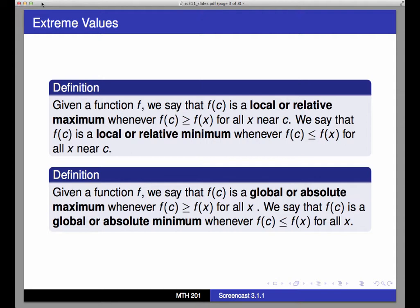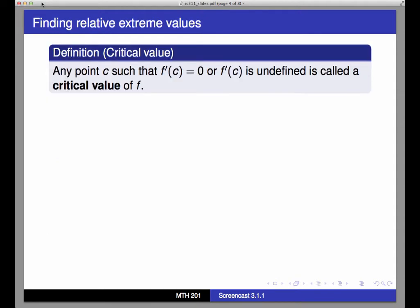Likewise, if f of c is less than or equal to f of x for all x, that is, f of c is the lowest point on the graph anywhere, then f of c is a global minimum. A key task that is central to most of the applications for this chapter is the ability to locate local and global extreme values of a function with a high degree of precision.